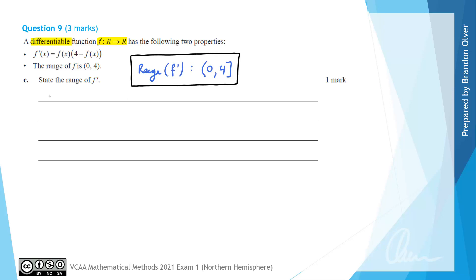So to help explain this, I'm just going to let y equal f(x). Therefore, f'(x) could actually be rewritten as y(4 minus y). Now, when we consider the case when y is approaching 0, we find that f'(x) will approach 0.